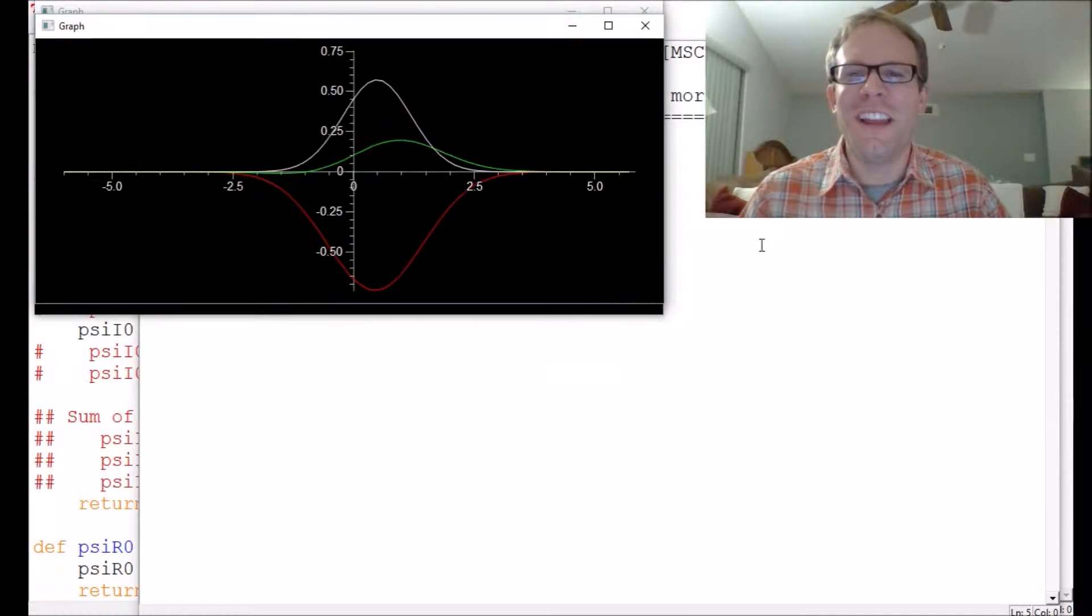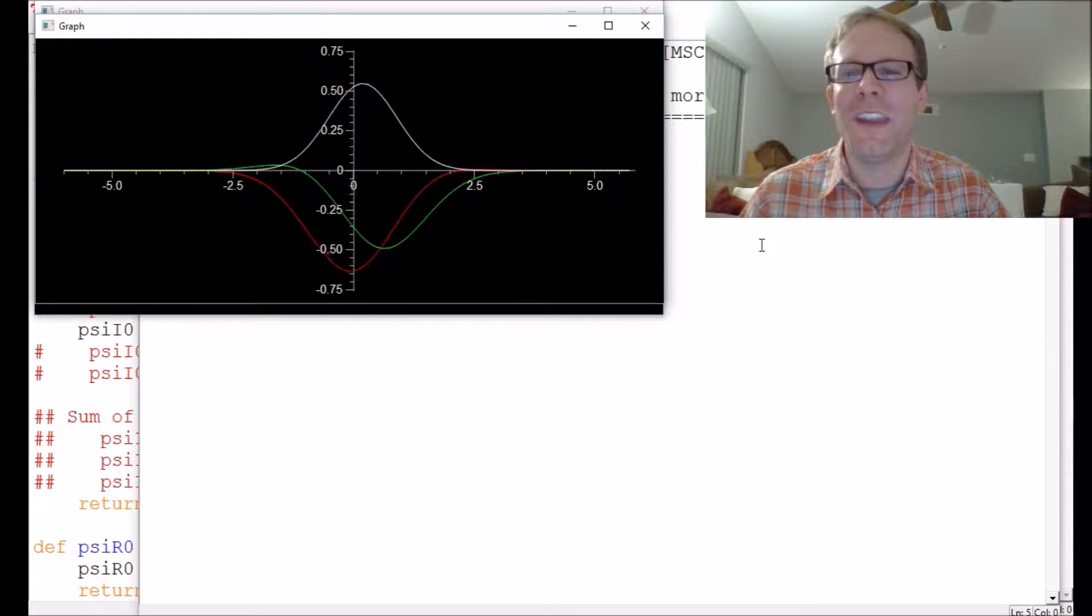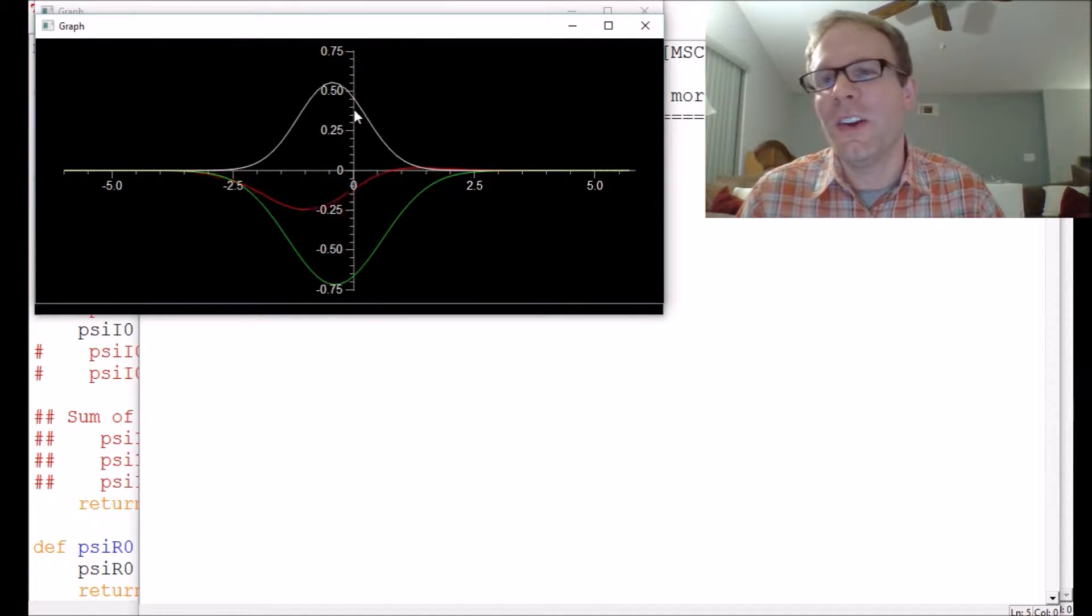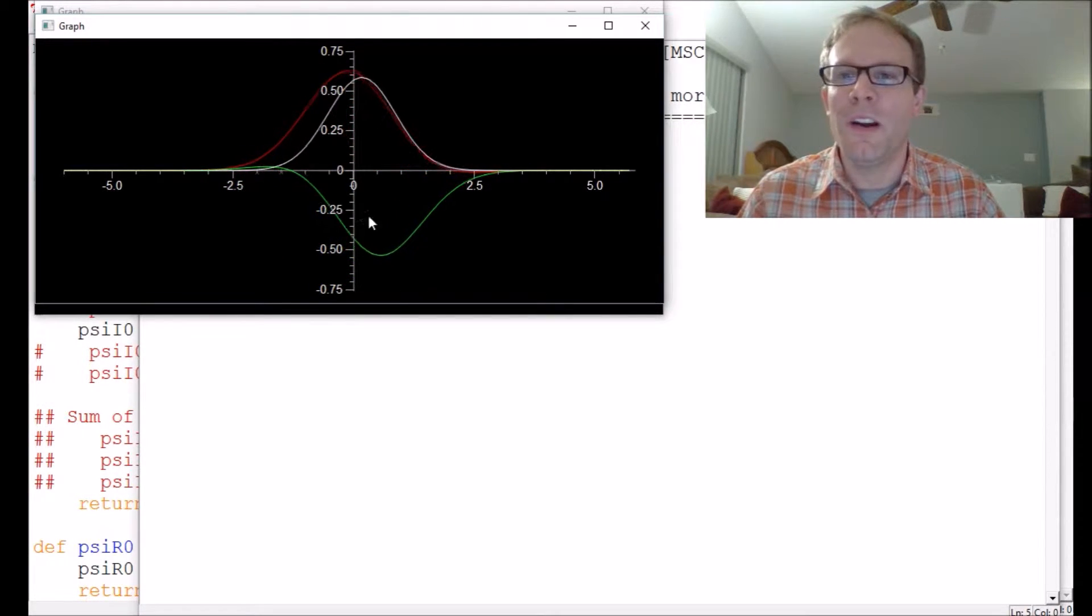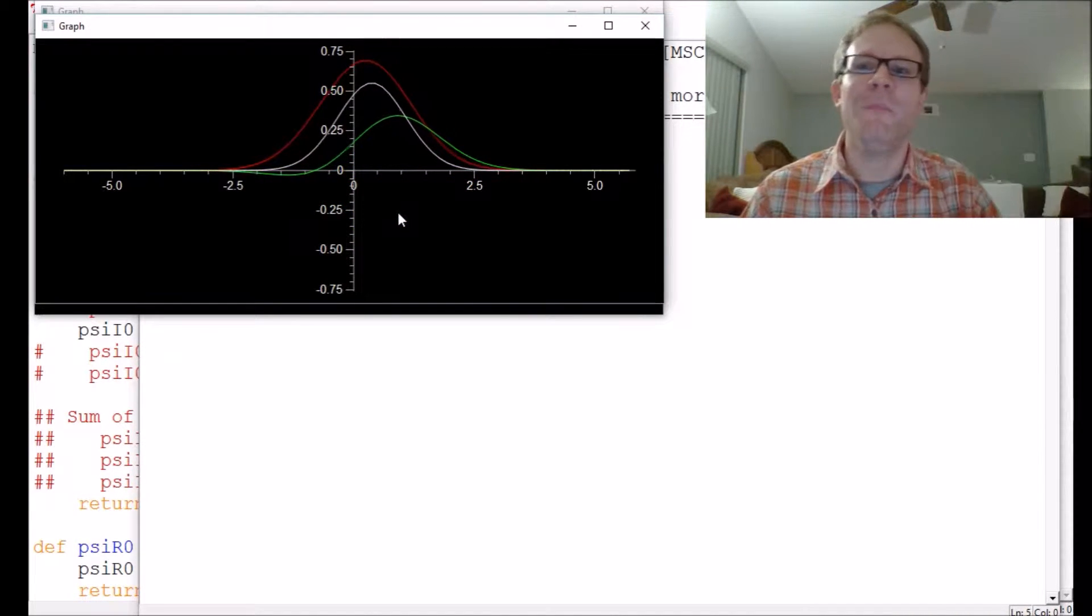Hello and welcome back to Let's Code Physics. We are continuing to develop our quantum mechanical wave function evolver. We've successfully got a code that integrates the Schrödinger equation and transforms the real part and imaginary part of the wave function one step forward at a time.